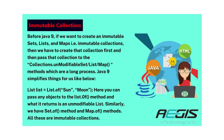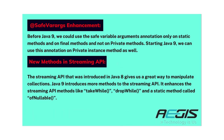Java 9 simplifies this: List list = List.of("sun", "moon"). Here you can pass any objects to the List.of() method and it returns an unmodifiable list. Similarly, we have Set.of() and Map.of() methods — all returning immutable collections. Next is @SafeVarargs enhancement. Before Java 9, we could use the @SafeVarargs annotation only on static and final methods, not on private methods. Starting Java 9, we can use this annotation on private instance methods as well.